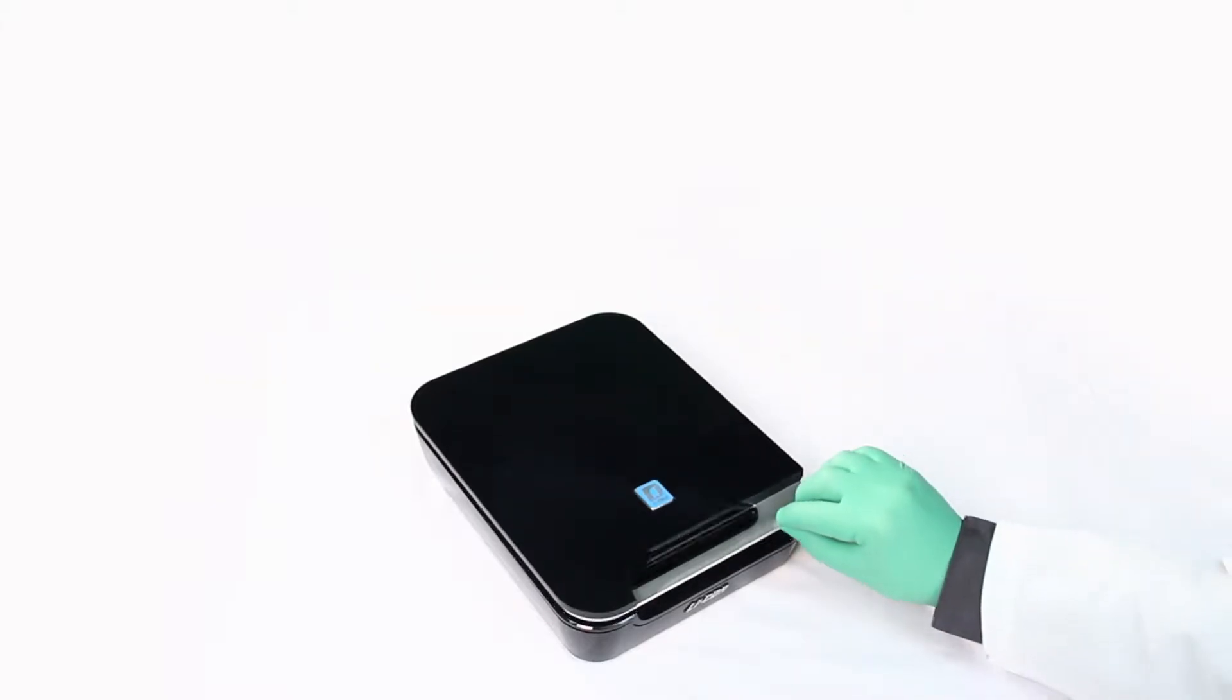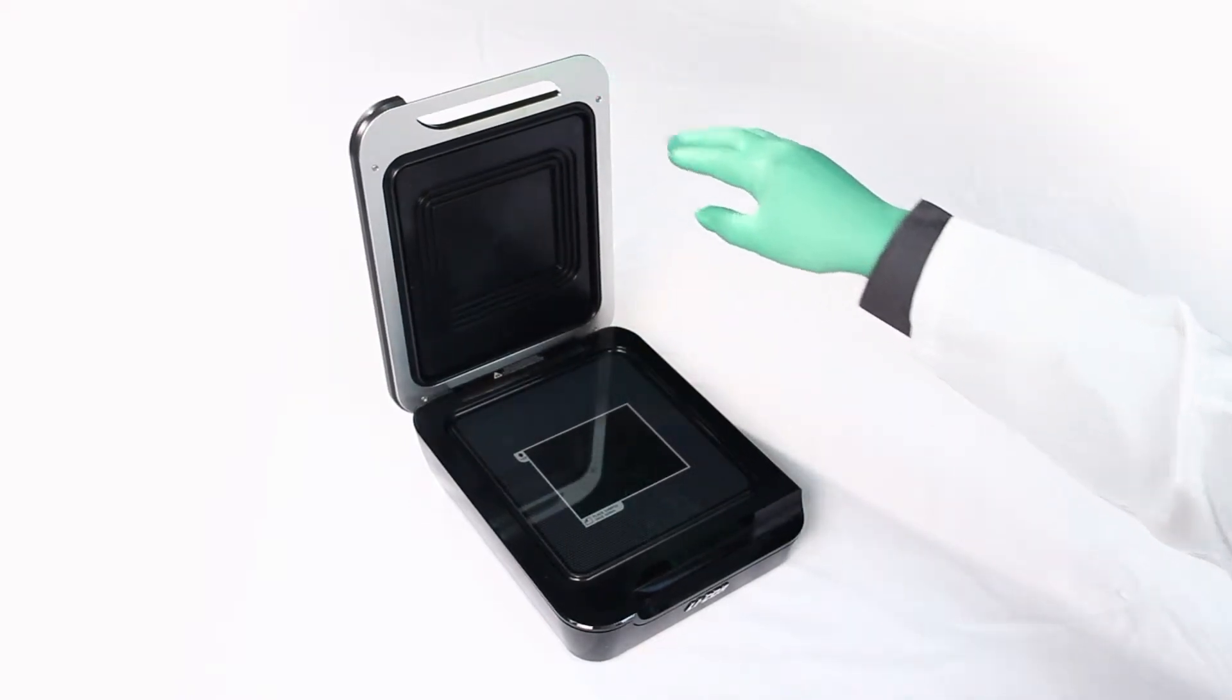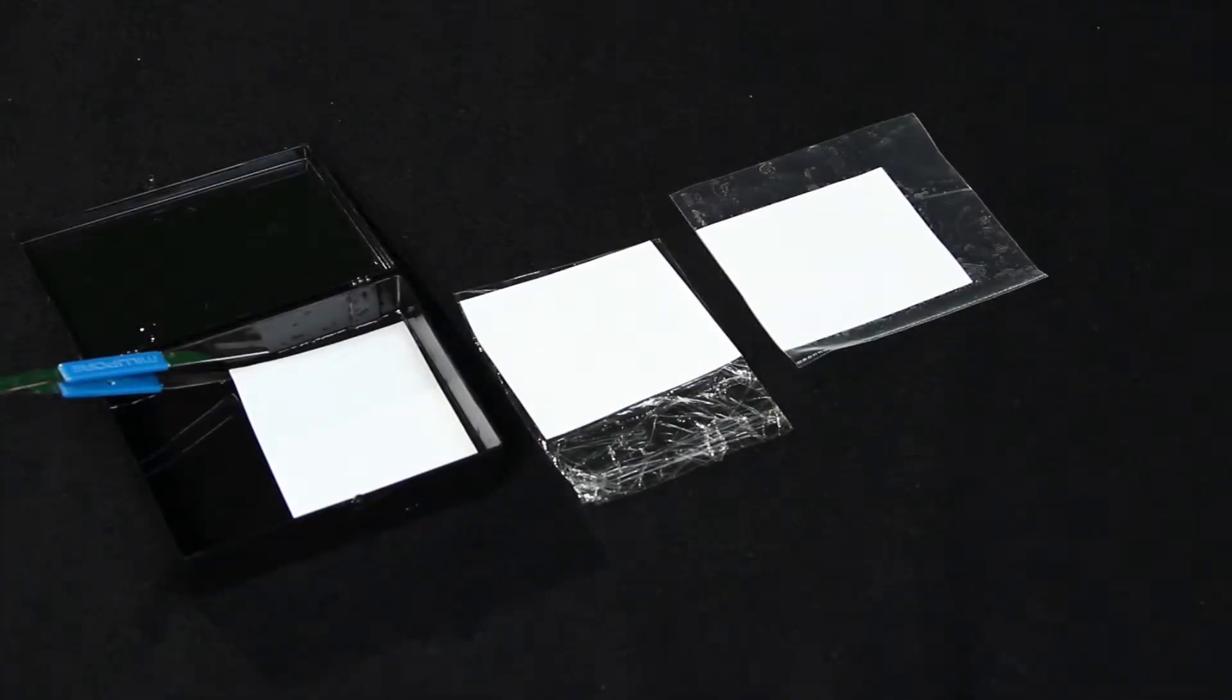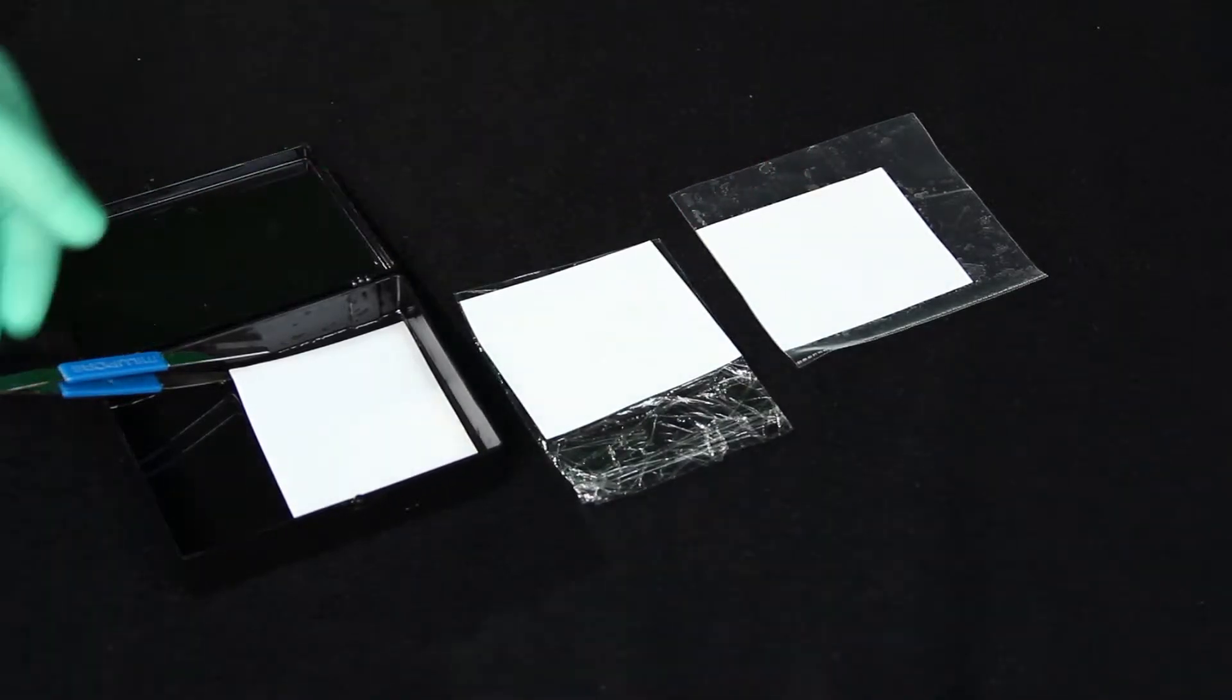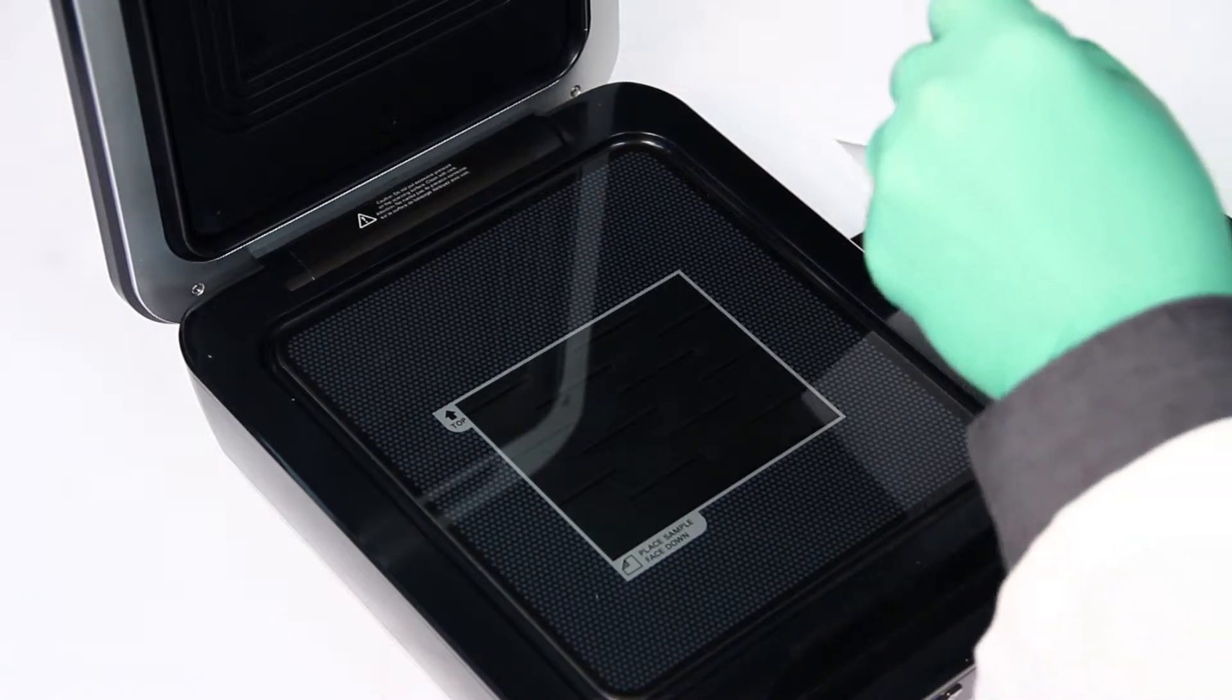The C-digit blot scanner offers flexibility in the way you process your blot for imaging. Once your blot is ready for substrate to be added, you can either choose to wrap the blot in plastic or place the wet blot directly onto the scanner surface.